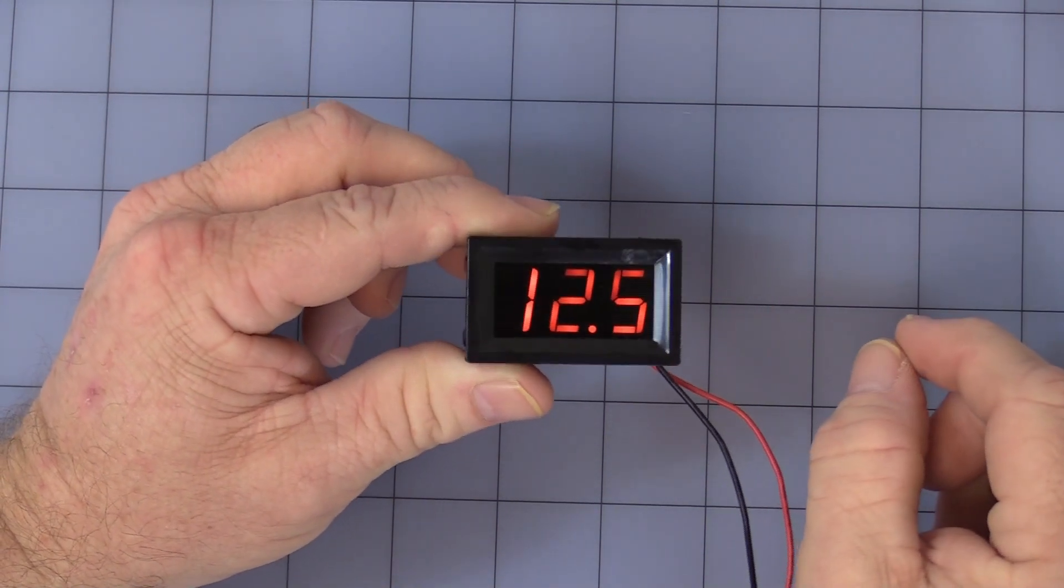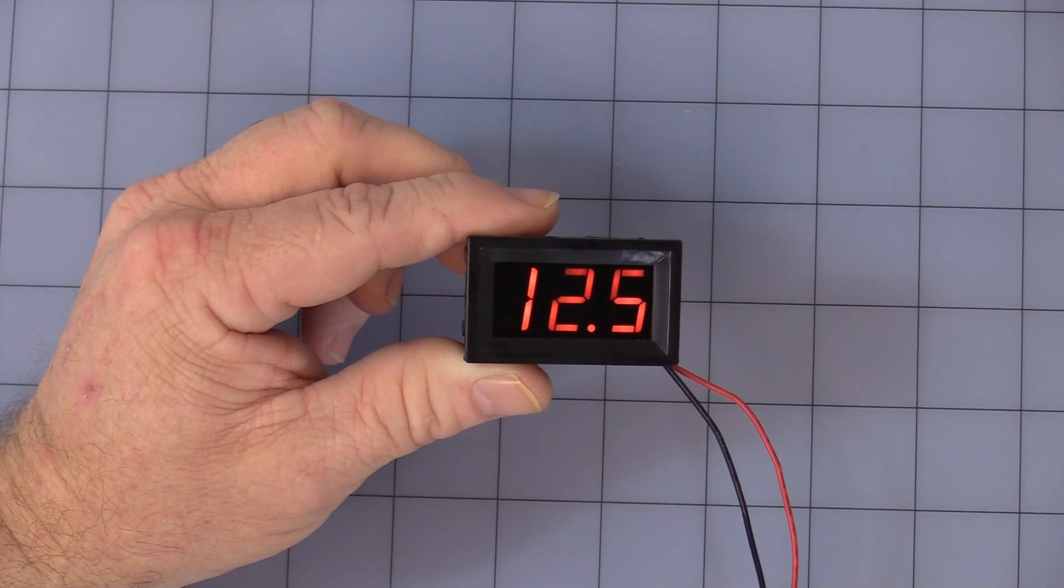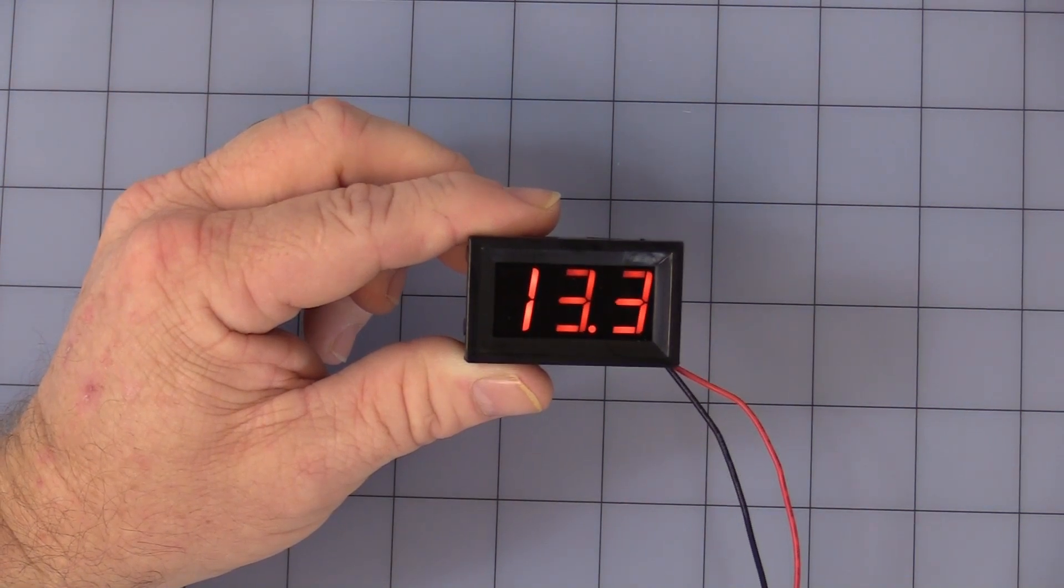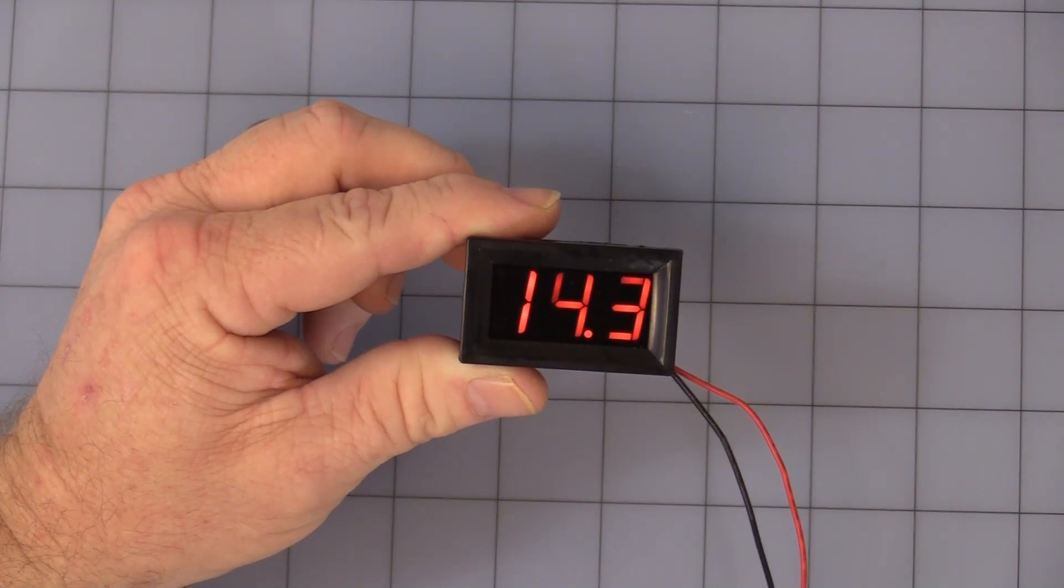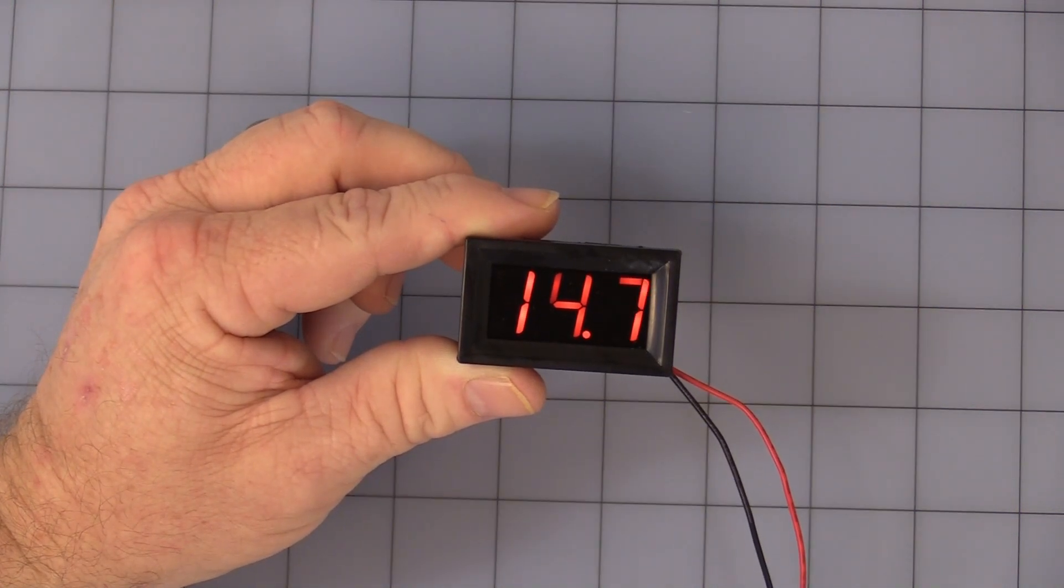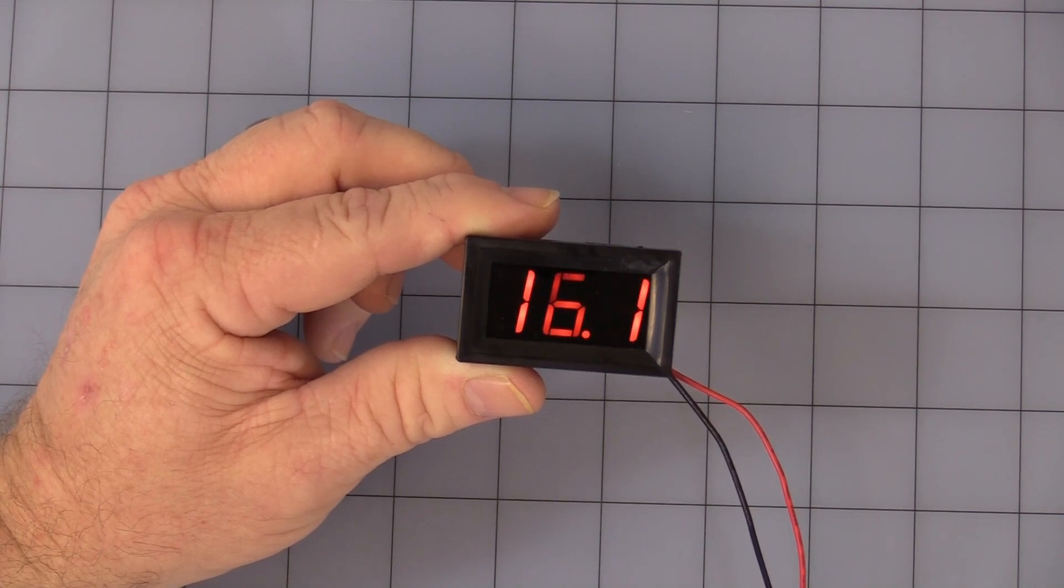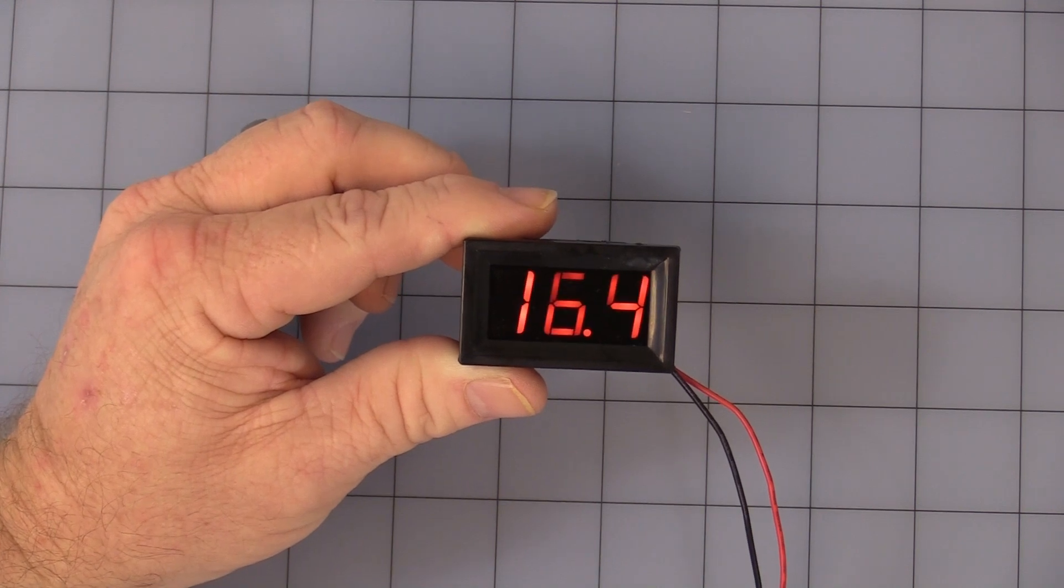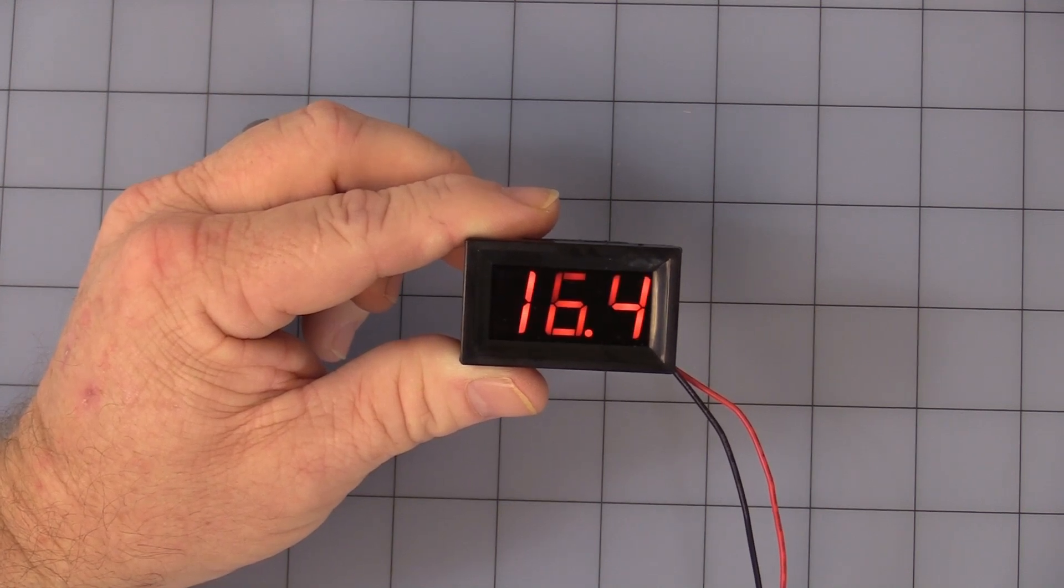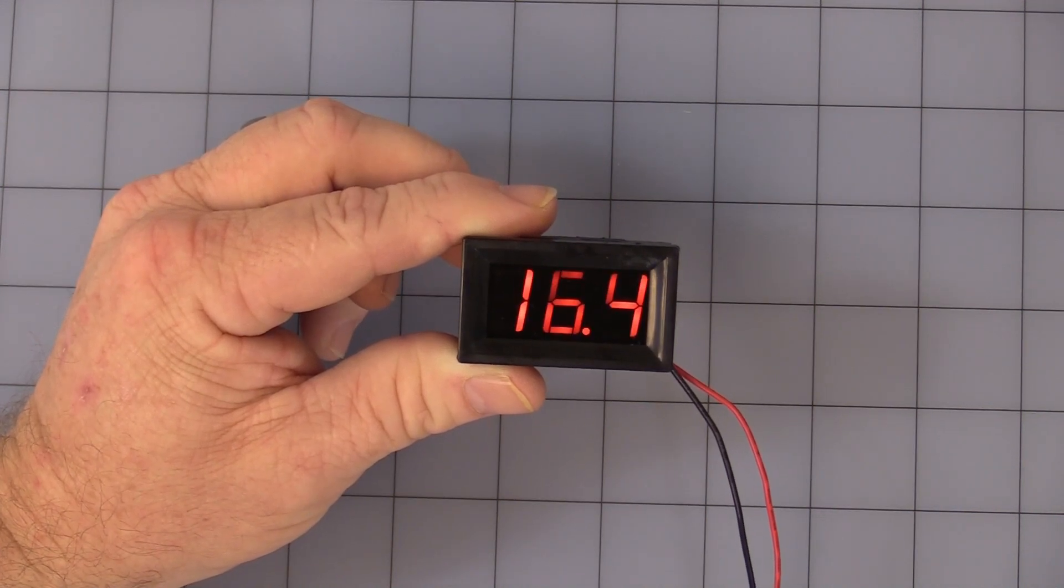I have this hooked up to my benchtop power supply so we can simulate the battery drain. Let's turn the voltage up and let's check the over range setting. And as soon as we hit 15 volts, it should start flashing and beeping. Now once it starts flashing and beeping, there's nothing you can do until it drops back below 15 volts. It's just simply going to keep sounding the alarm.